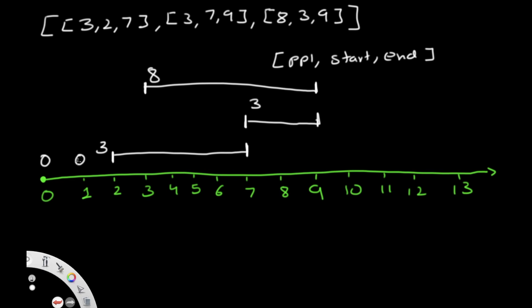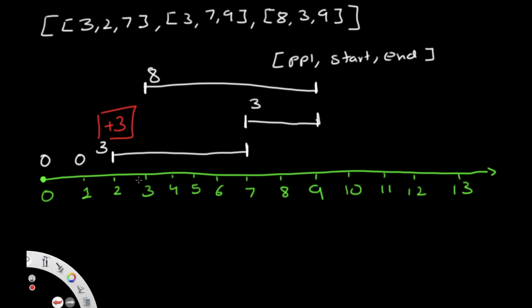We start with zero passengers. Once we reach kilometer 2, we pick up three passengers, so we now have three total. At kilometer 3, we pick up eight more passengers — three plus eight gives us 11. That makes sense since our capacity can hold up to 11 people. If this number ever increases beyond capacity, we won't be able to facilitate everyone.